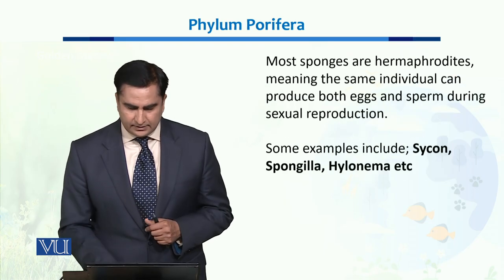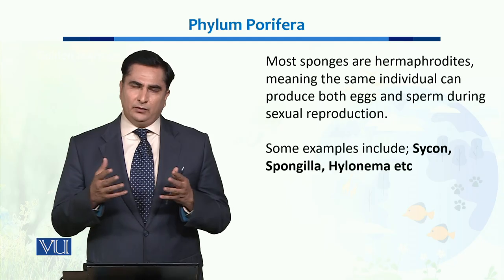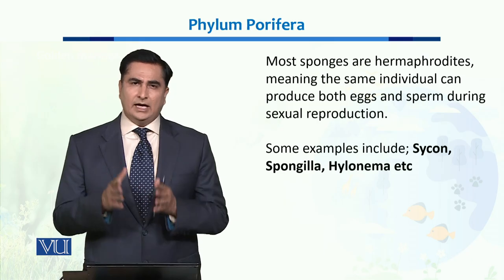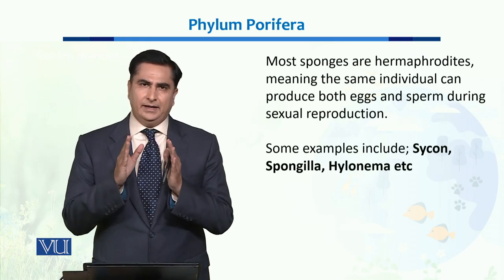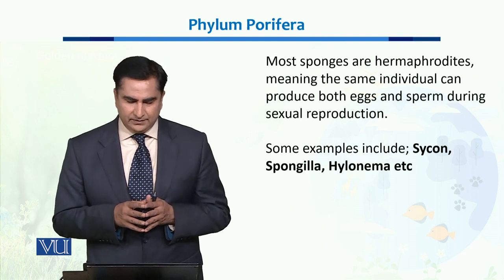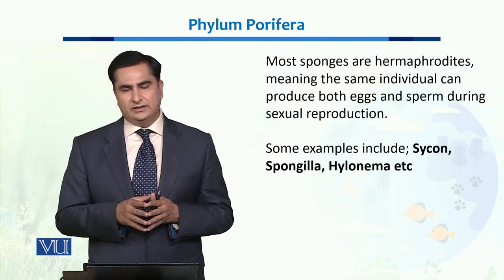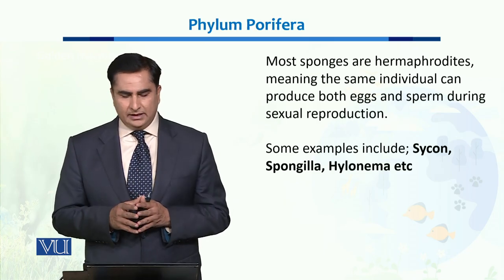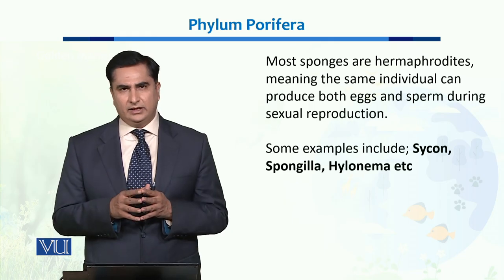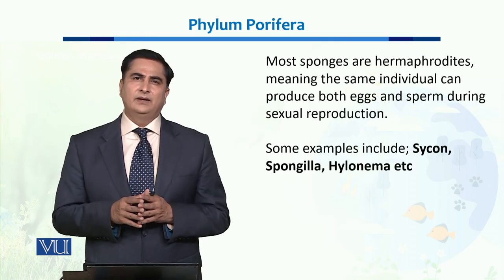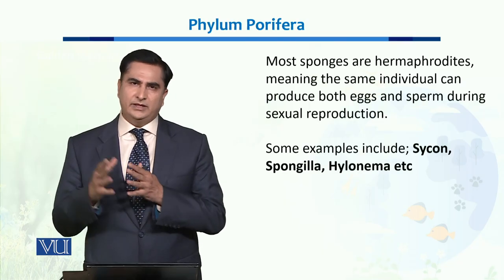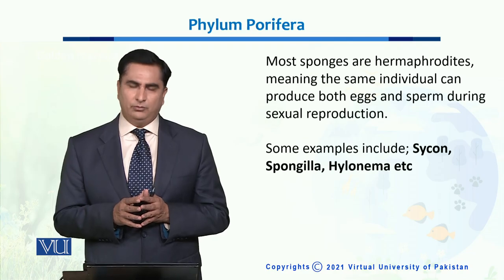When we talk about sexual reproduction, most of the sponges are hermaphrodites. Hermaphrodites means they both have male as well as female reproductive gametes. The same individuals can produce eggs and sperms during sexual reproduction, and these result in the production of new organisms of phylum Porifera.